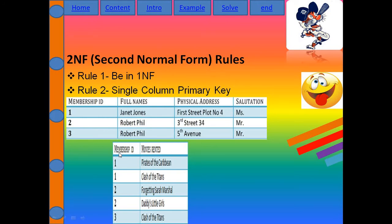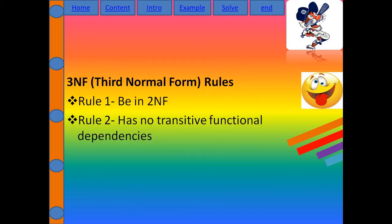In the second table, the movies are given their own ID. In the first table, Membership ID is the primary key, and in the second table, Membership ID acts as a foreign key. So to summarize Second NF: be in First NF, then use a single-column primary key. That's it.